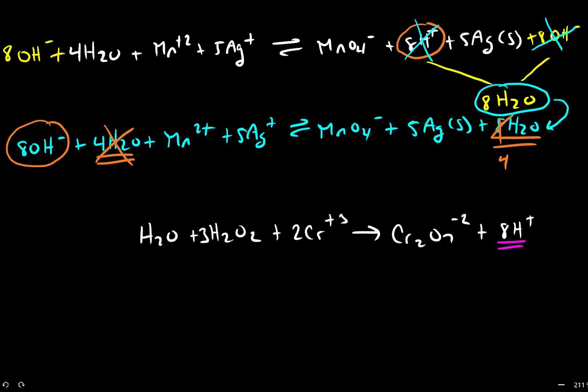So we would fix this problem by adding eight hydroxides to each side and recognizing that the eight protons and eight hydroxides become eight water molecules. We can simplify this a little bit by recognizing that I have one water on the reactant side, so that will cancel out one of the waters on the product side.